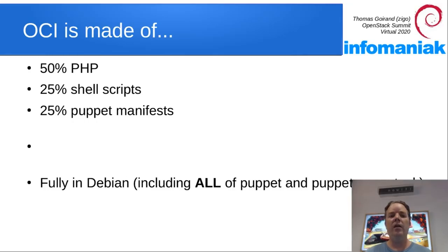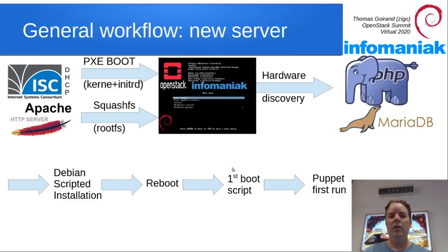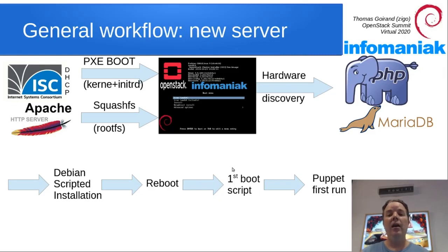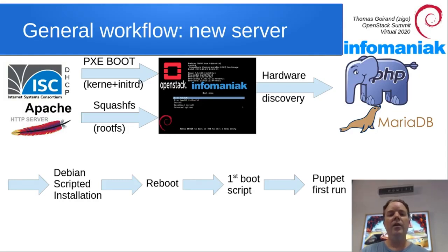Everything is in Debian — and when I say everything, I really mean it. This includes Puppet manifests as well. The way the bare metal installer works is that your servers will be booted over PXE under a Debian Live system. Hardware discovery will start and send all the information to the PHP MySQL backend. Then a Debian scripted installation runs, the server reboots, first boot scripts are hooked, and then Puppet runs.